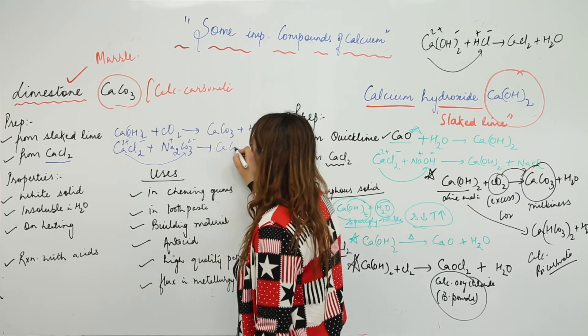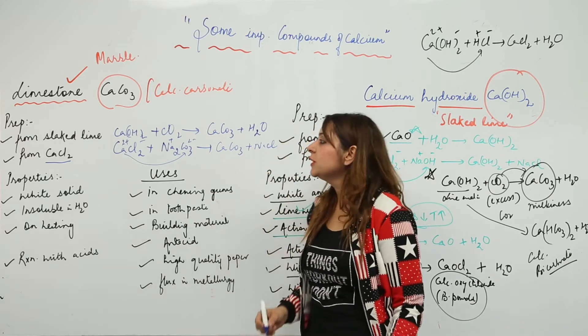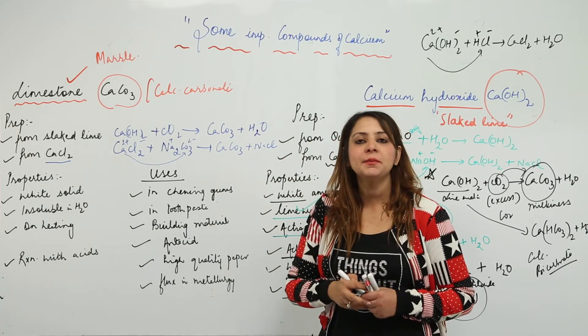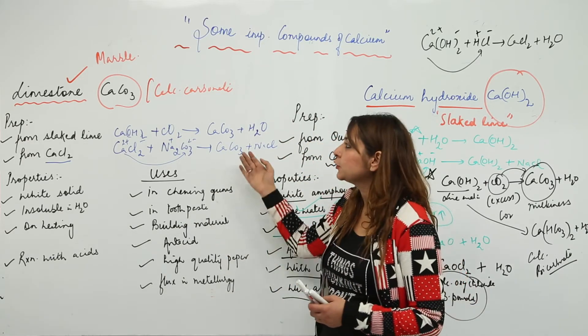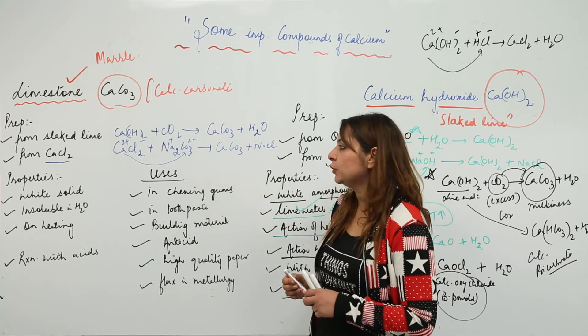Obviously you are going to get CaCO3 with NaCl. So this is how from slake lime and by use of calcium chloride, we can actually prepare the marble, which is calcium carbonate, also called limestone CaCO3.